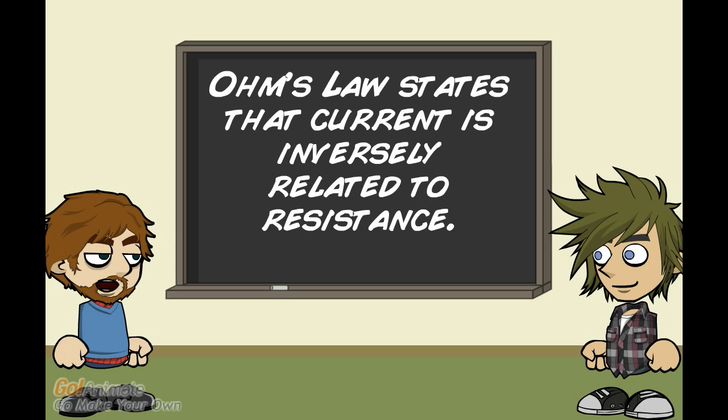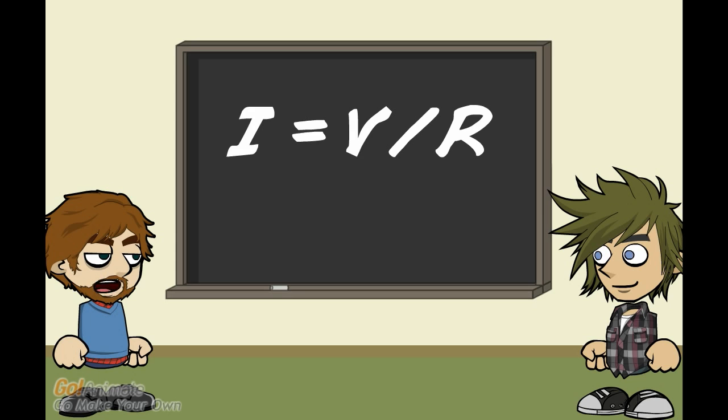And Ohm is the person who gave us the idea of resistance and he defined it so that current is inversely related to resistance. Putting it all together, we get the equation shown, I equals V divided by R.